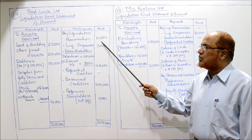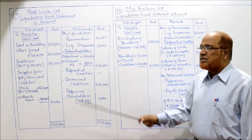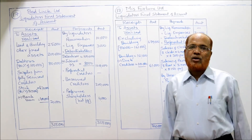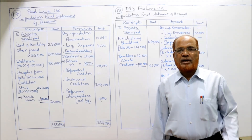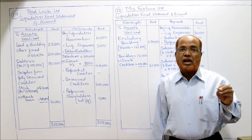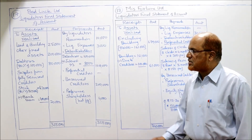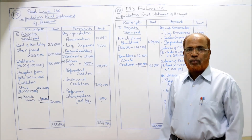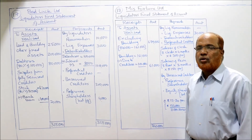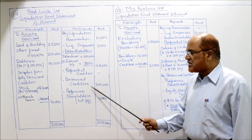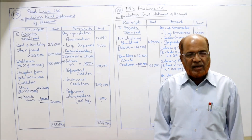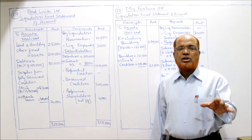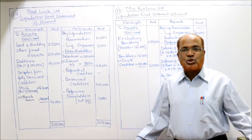On the payments side: liquidator's remuneration 10,000 and liquidation expenses 3,000 — both directly given. Debenture holders get 1,00,000 plus outstanding interest 8,000 — so 1,08,000 total at the time of liquidation. Preferential creditors are not there in this problem. Unsecured creditors — 2,00,000 given in the balance sheet — the company is in a position to pay the full amount, making it a solvent company.